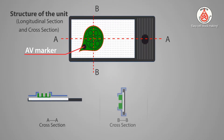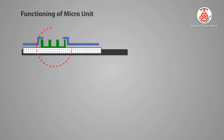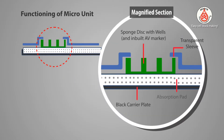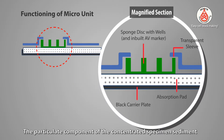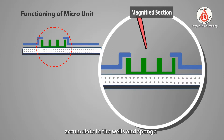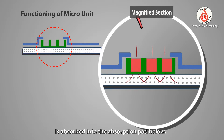The structure of the micro-unit is explained with longitudinal and cross sections. Regarding its functioning: the particulate component of the concentrated specimen sediment accumulates in the walls and sponge, while the fluid component of the specimen is absorbed into the absorption pad below.